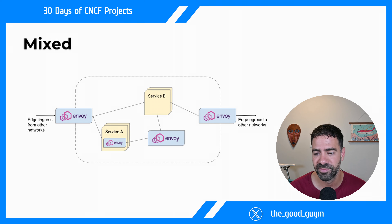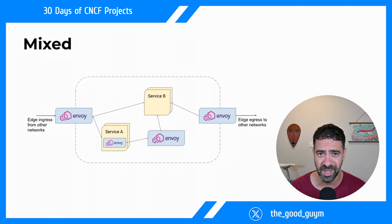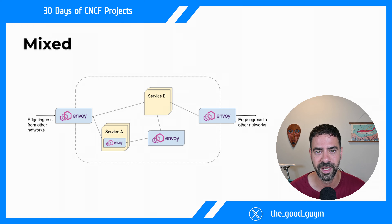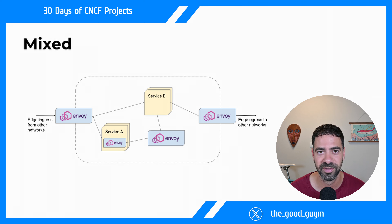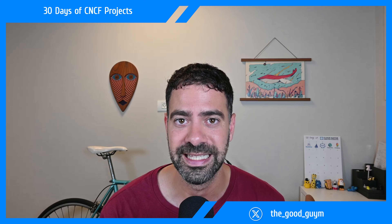There are also mixed variations — for example, combining ingress, egress, and a service mesh within the same application. You can use Envoy as the edge ingress and also as a service proxy for each individual service. Envoy is flexible enough to fit any network architecture; you just need to decide what you want and then configure the appropriate Envoy deployment for your use case.